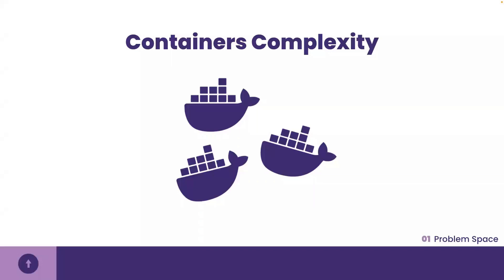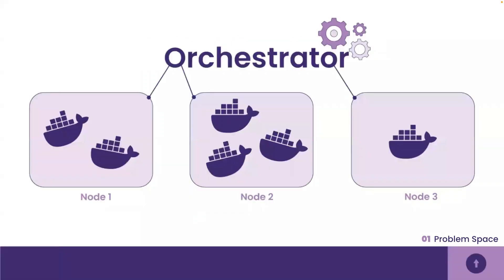Once the application is packaged into a container and ready to run on any environment, the next challenge is the deployment and management of these containers. What if a container fails in the middle of the night? How does that container get restarted? What if there are multiple containers? The complexity only grows. The answer to this is container orchestration. Container orchestration manages the complexity of running containers on the cloud. It allows developers to deploy, scale, and secure containers with minimal effort. Container orchestration automates the various tasks required in the container lifecycle, including provisioning, networking, configuration, and scheduling, as well as allocating resources across containers.